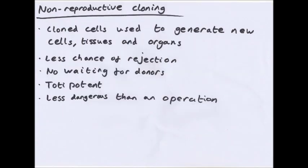Non-reproductive cloning is just using cells. You can clone cells to generate new cells, tissues and organs. If you take cells out of a very early embryo, you have stem cells. These stem cells are totipotent, meaning they can differentiate into any type of cell.